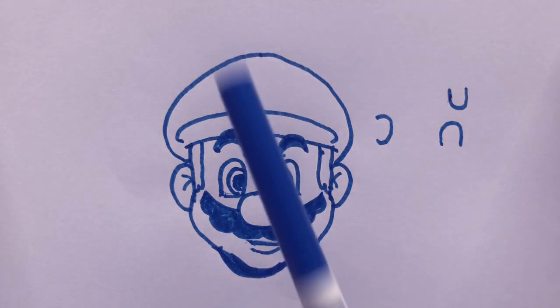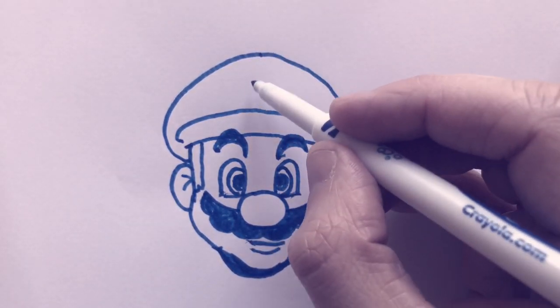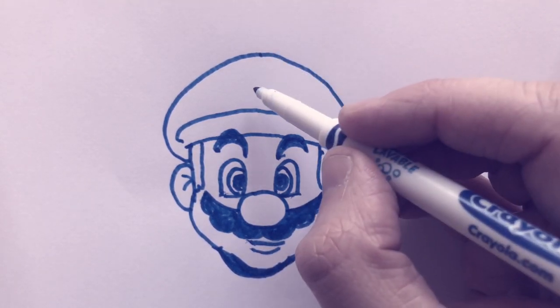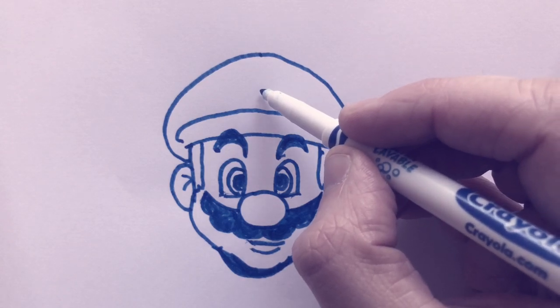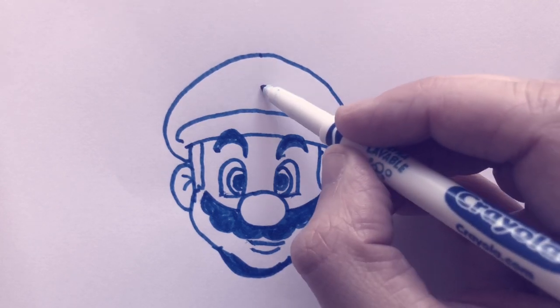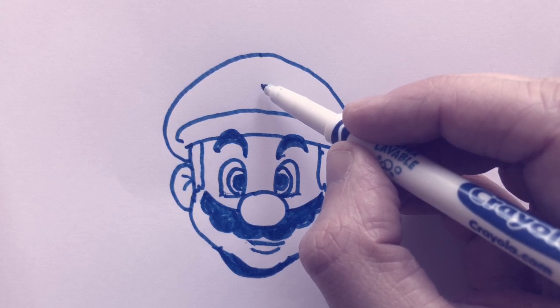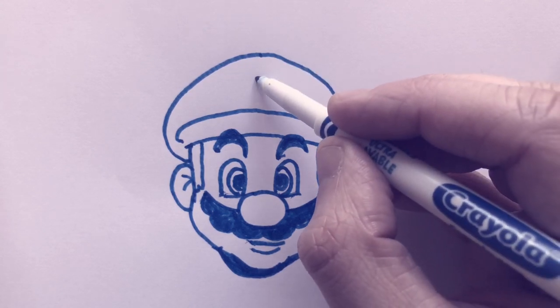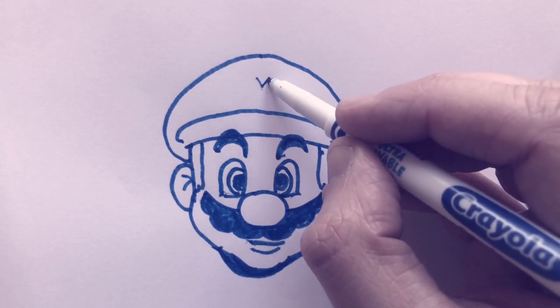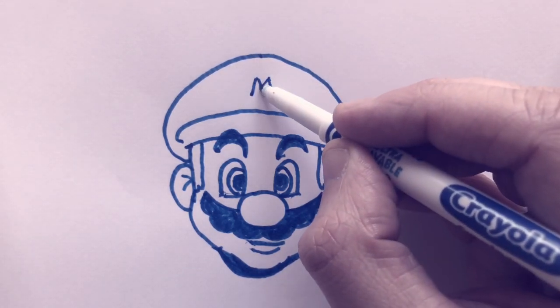Now we just need to do the letter M symbol on his hat. I'm going to start with the M and then we'll put the circle around it, so that we'll make sure it fits in. Again, we want it to be right in the middle, so I'm going to put a dot right in the middle of there. That's going to be the middle of the M. So maybe we'll do a little letter V here coming off of that dot, and I can put my line going down on both sides. There's my M, M for Mario.